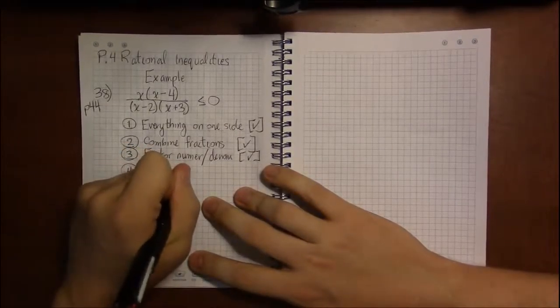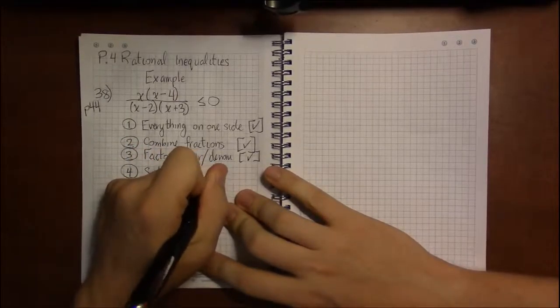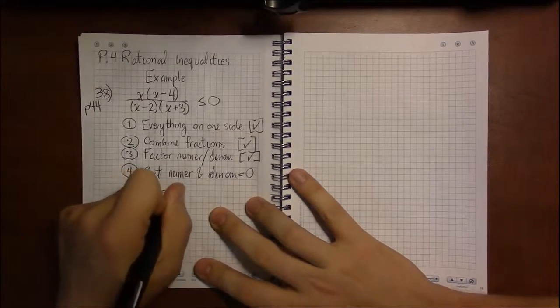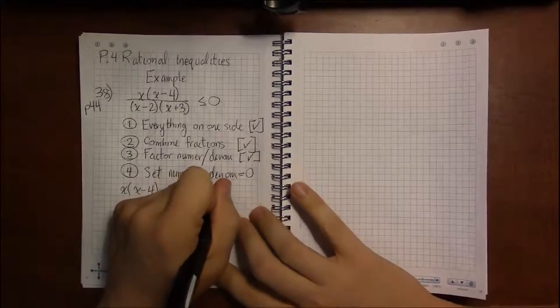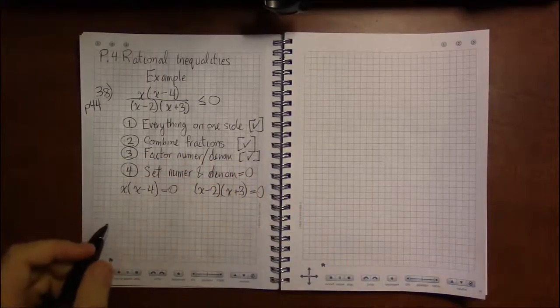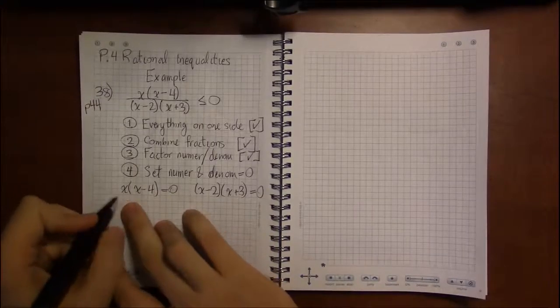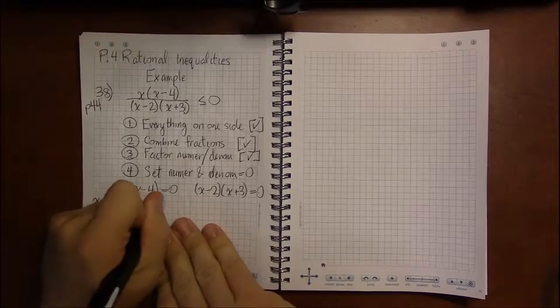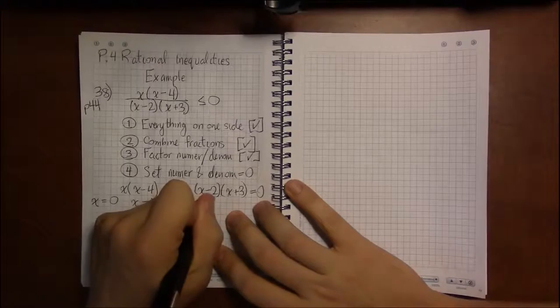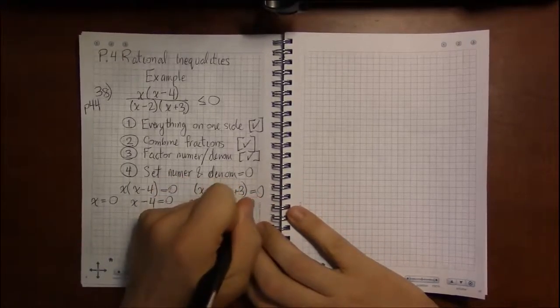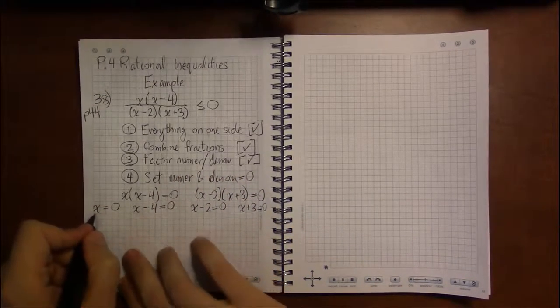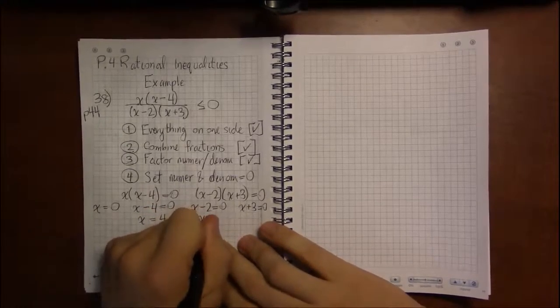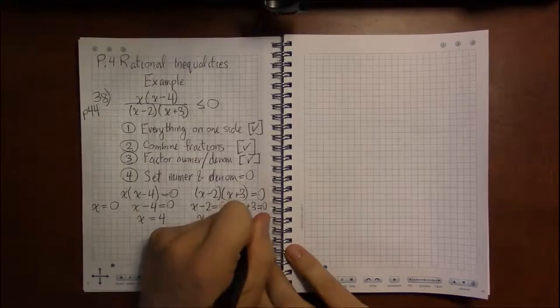Now, we're going to set the numerator and the denominator equal to 0. So, in this case, we're going to set x times x minus 4 equal to 0. And we're going to set x minus 2 times x plus 3 equal to 0. Well, that means we've got a product being 0. So, we set each factor of that product equal to 0. And the same applies with setting the denominator equal to 0. We get x minus 2 equals 0 or x plus 3 equals 0. So, we're going to have a lot to test. x equals 0. x minus 4 equals 0, well, that happens when x is 4. x minus 2 equals 0, well, that happens when x equals 2. x plus 3 equals 0. That happens when x equals minus 3.